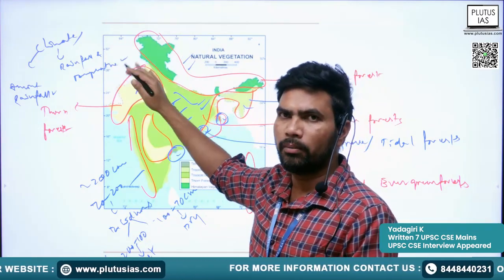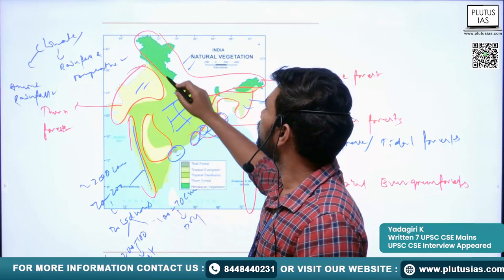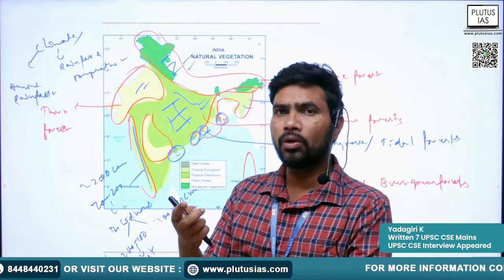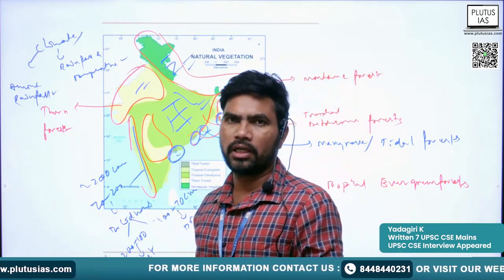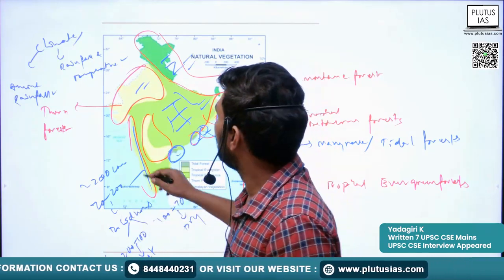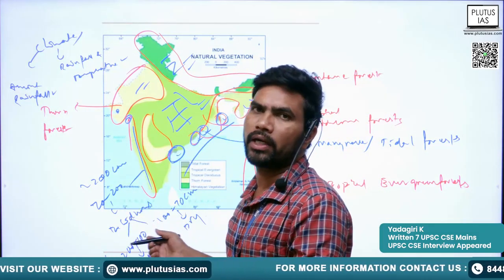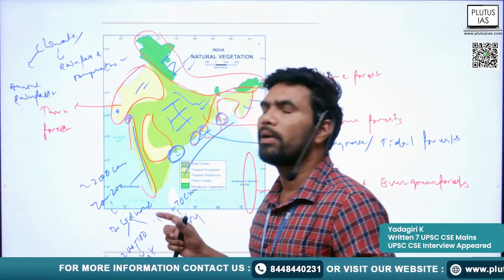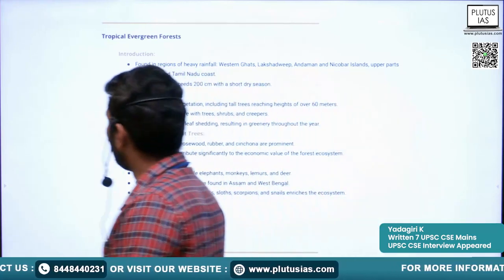Where rainfall is even less than 70 cm, we find scrub or thorn forest. In higher mountain regions like the Himalayas and the highest parts of the Western Ghats, we find mountain forest, which can be divided into three subgroups. In tidal or coastal areas — especially the eastern coast and some regions of Gujarat — we find tidal or mangrove forest.